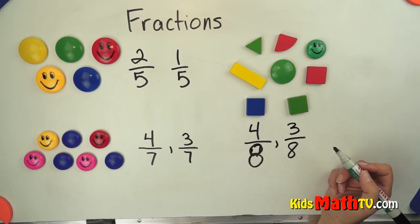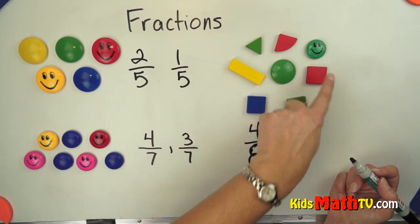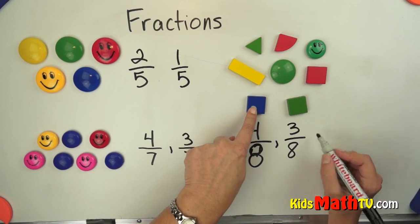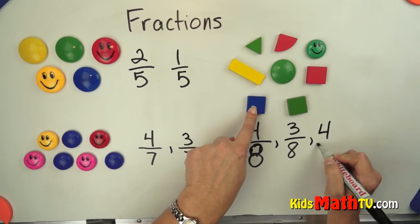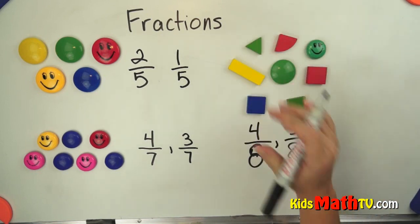I could do rectangles. How many rectangles? One, two, three, four. Yes, a square is a rectangle. So there are four rectangles and eight possible or eight total pieces.